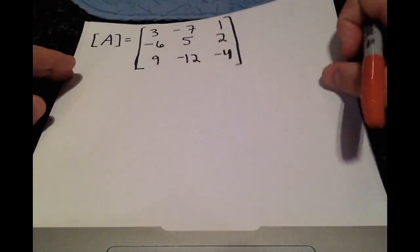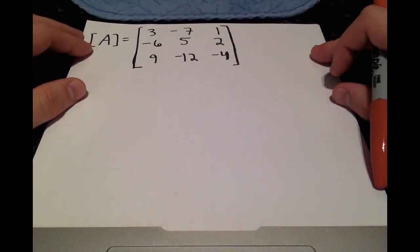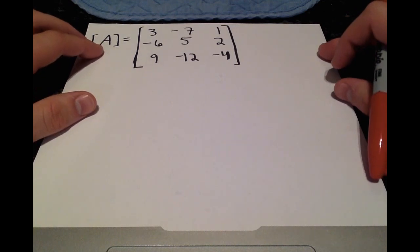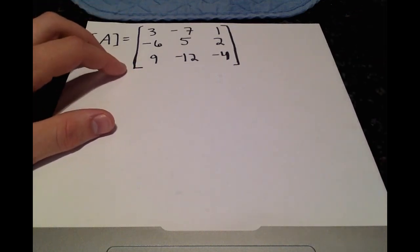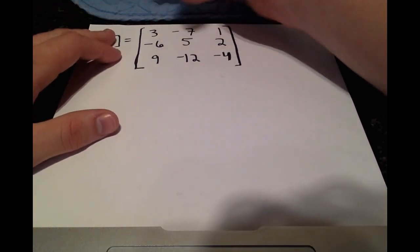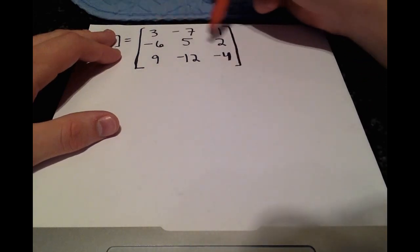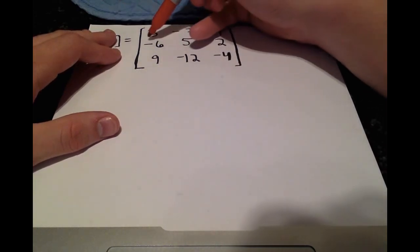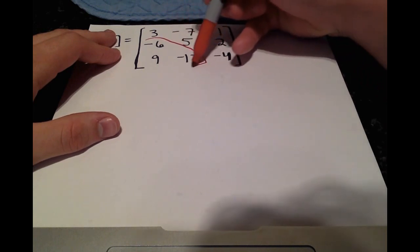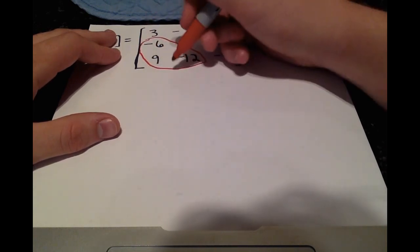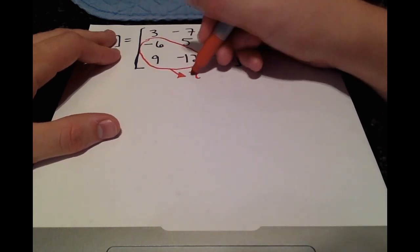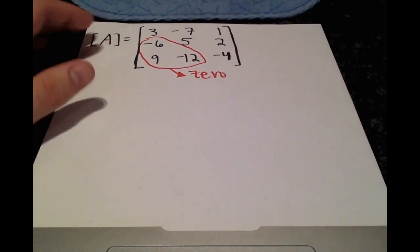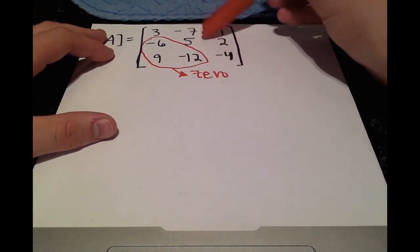So the first step to getting the U matrix, the upper matrix, is we want to manipulate A in such a way that we only have terms, numerical values along the diagonal and above, and we want these terms below the diagonal to become 0. And we have to do that through row operations.